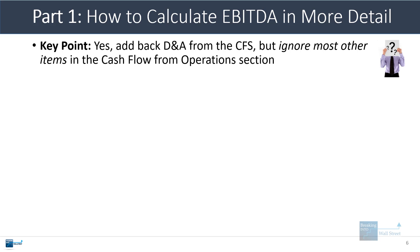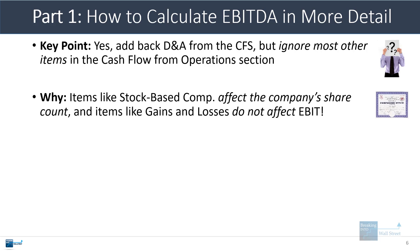With the calculations, I think the main thing to be careful of, besides adding the D&A from the cash flow statement, is that you actually want to ignore most of the other items in cash flow from operations in most cases. Items like stock-based compensation affect the company's share count, and items like gains and losses do not actually affect EBIT, so it doesn't really make sense to add either of these back.